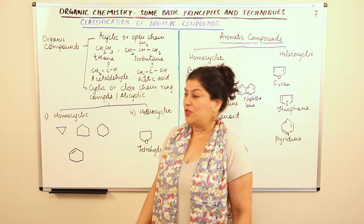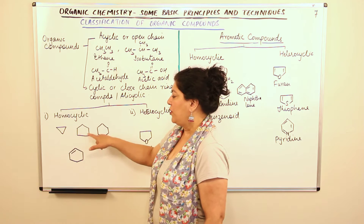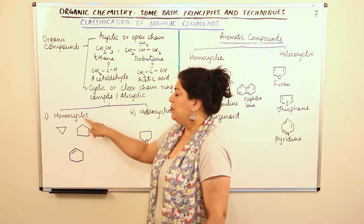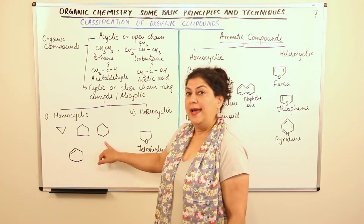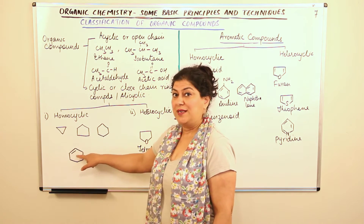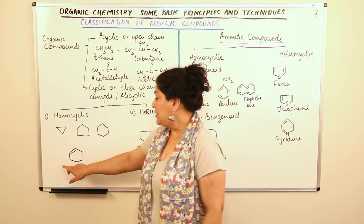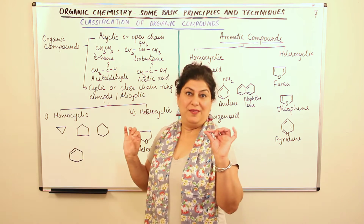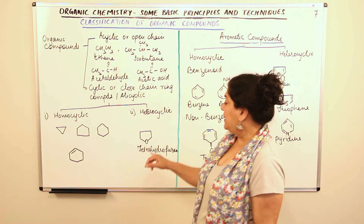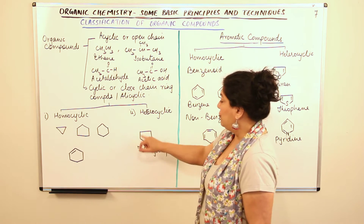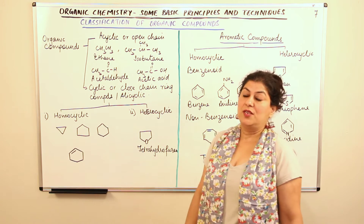For example, in homocyclic alicyclic hydrocarbons: a triangle shape has three corners, meaning three carbon atoms — that is cyclopropane. A pentagon has five corners — that is cyclopentane. A hexagon has six carbons — cyclohexane. One with a double bond and six carbons is cyclohexene. In heterocyclic hydrocarbons, an example is tetrahydrofuran, which has five atoms in the ring — four carbons and one oxygen.